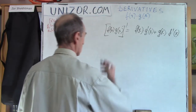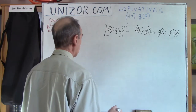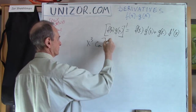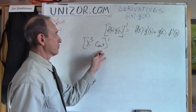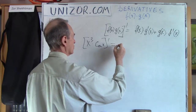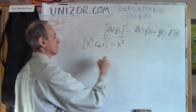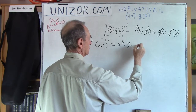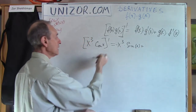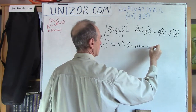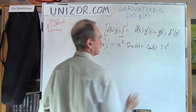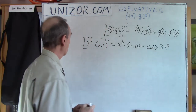Let's use this formula to derive a few derivatives. First: the derivative of x³ times cos(x). This is a product of two functions, x³ and cos(x). It's the first function x³ times the derivative of the second, which is −sin(x), plus the second cos(x) times the derivative of the first, which is 3x². That's the result.